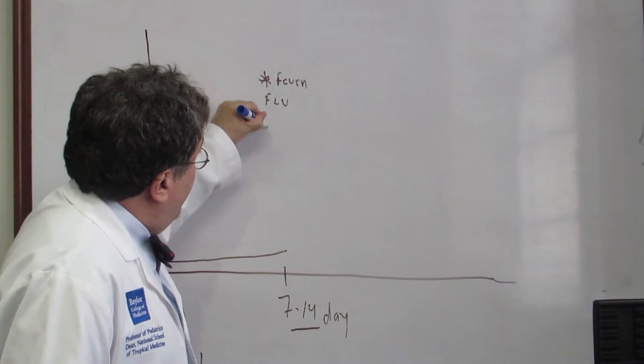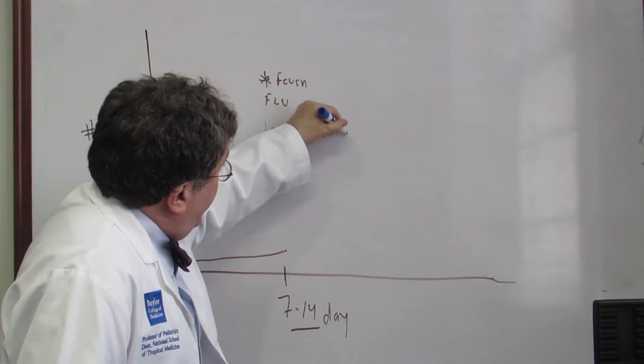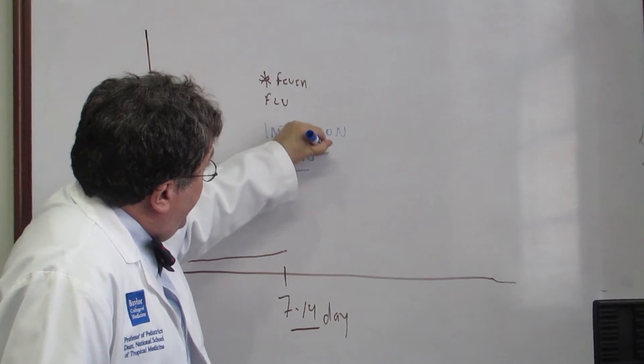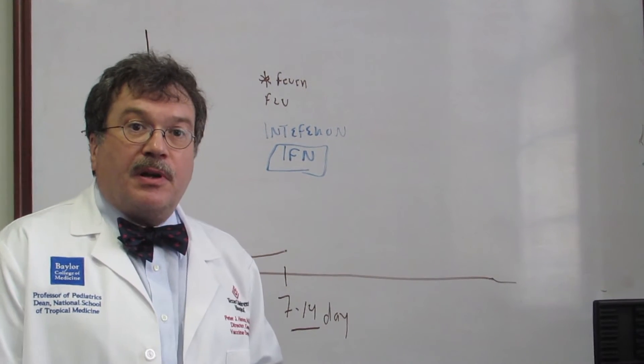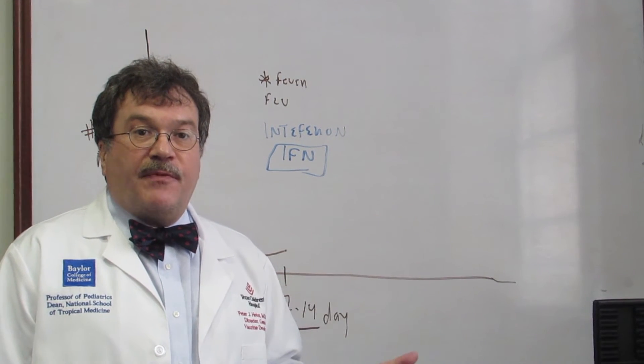So typically what happens around this period is that we start producing this protein called interferon, that I'll abbreviate as IFN. And it is one of the most potent factors in our bodies that can be used to combat virus infections.